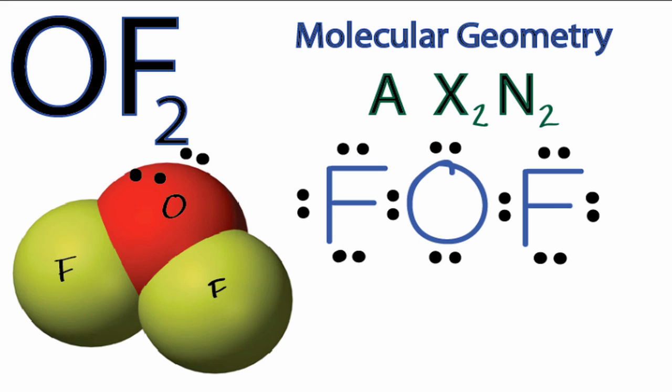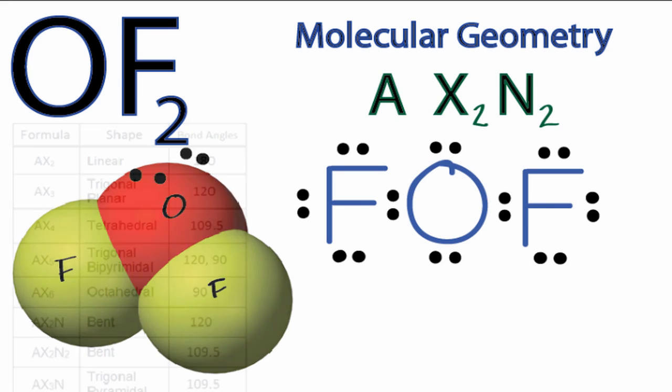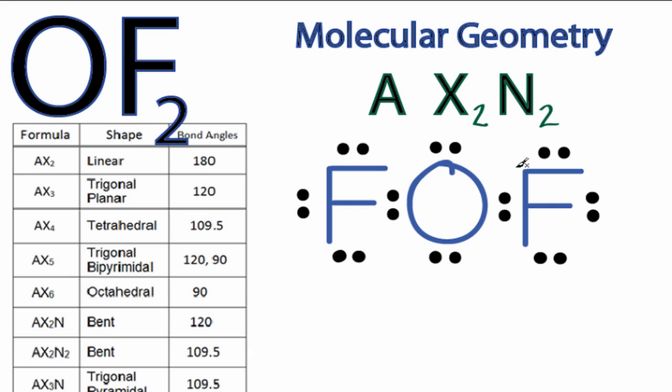You could have memorized that AX2N2 is a bent molecular geometry, or if you had one available, you could look it up in a table. As we go down our table here, we have AX2, AX3, all the way to AX6, AX2N,